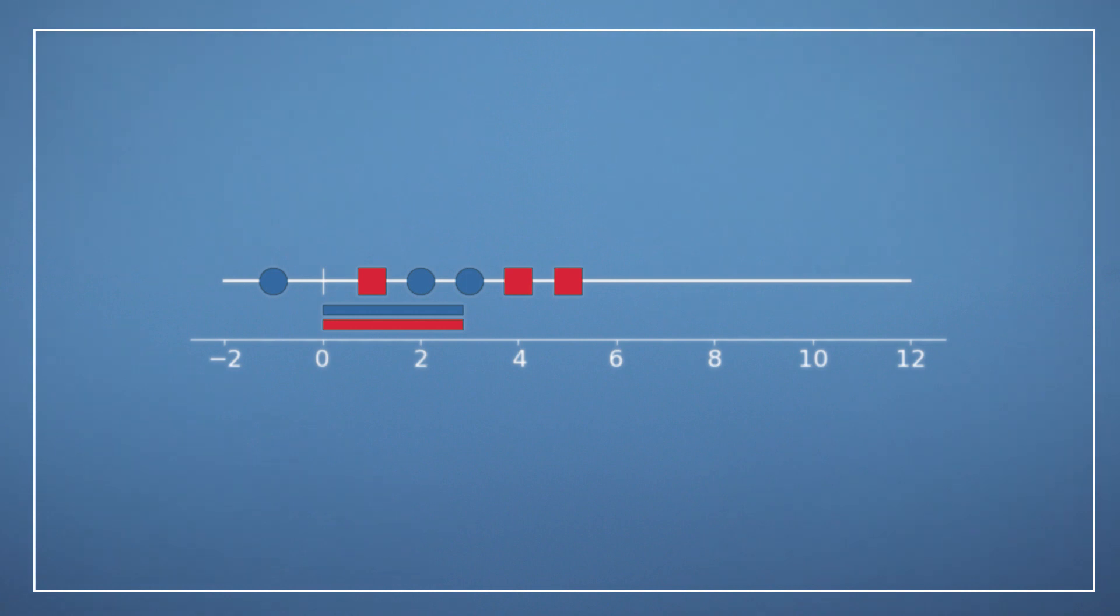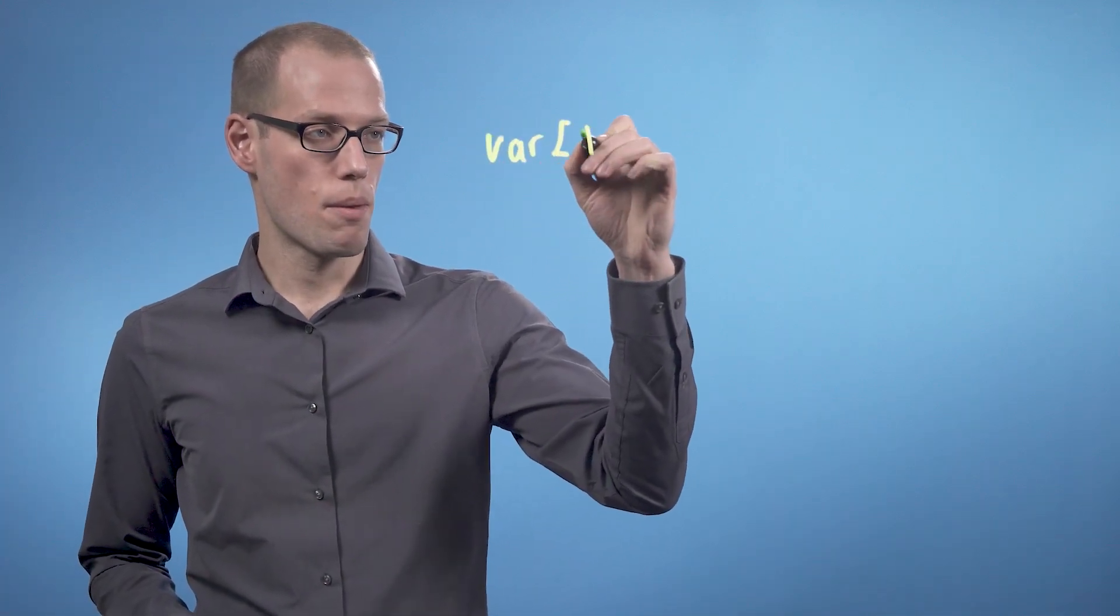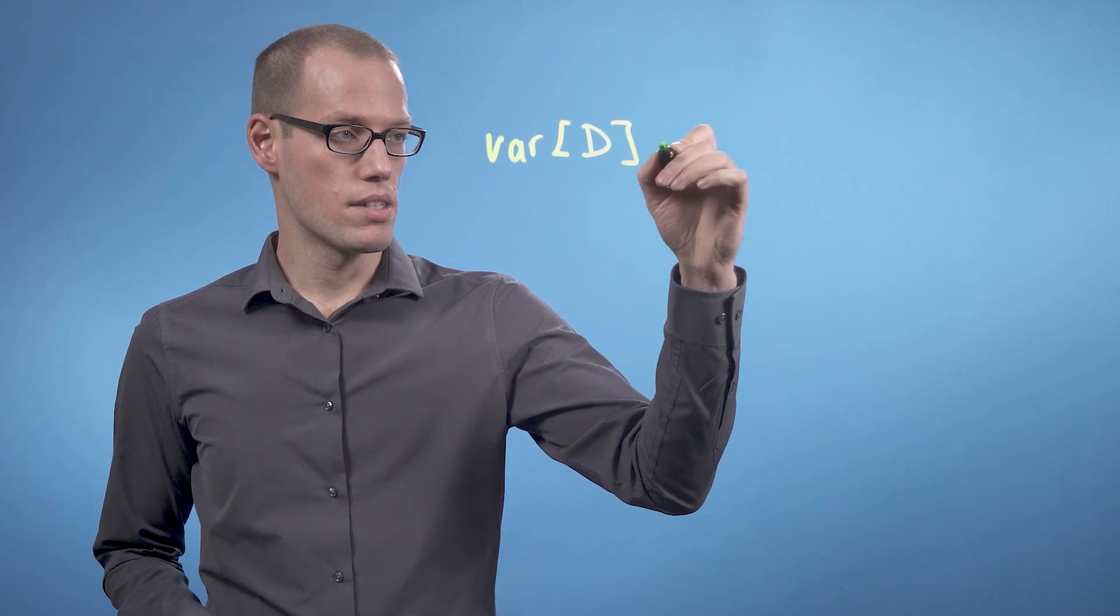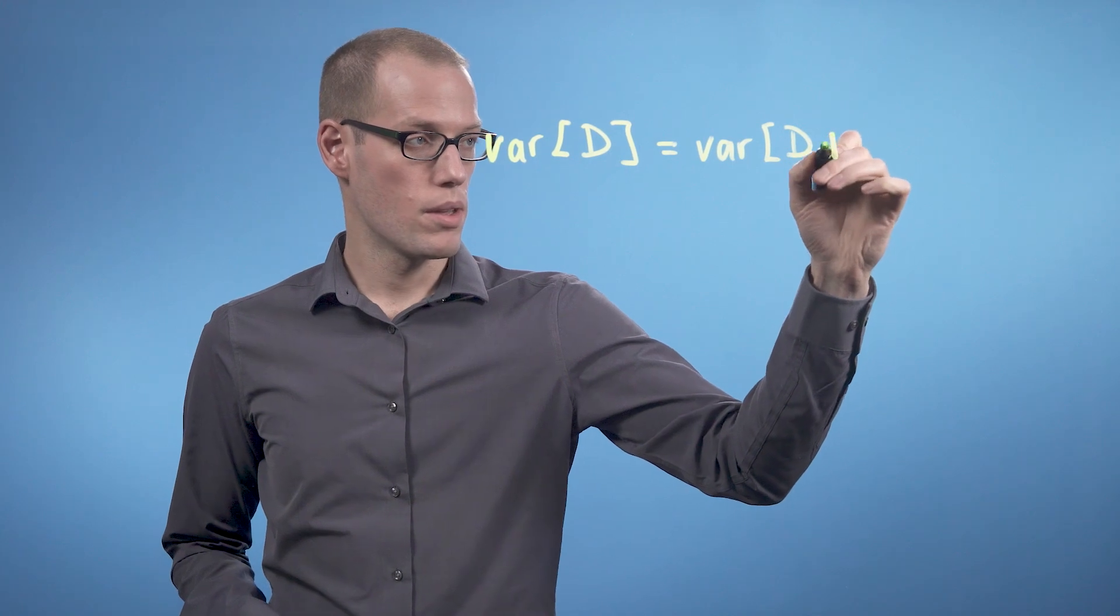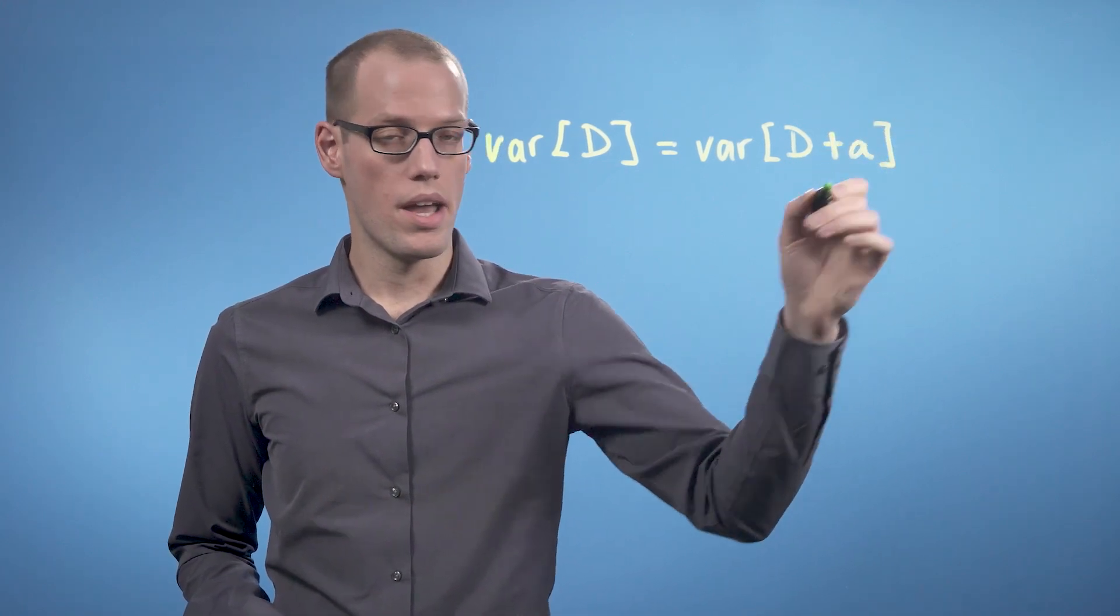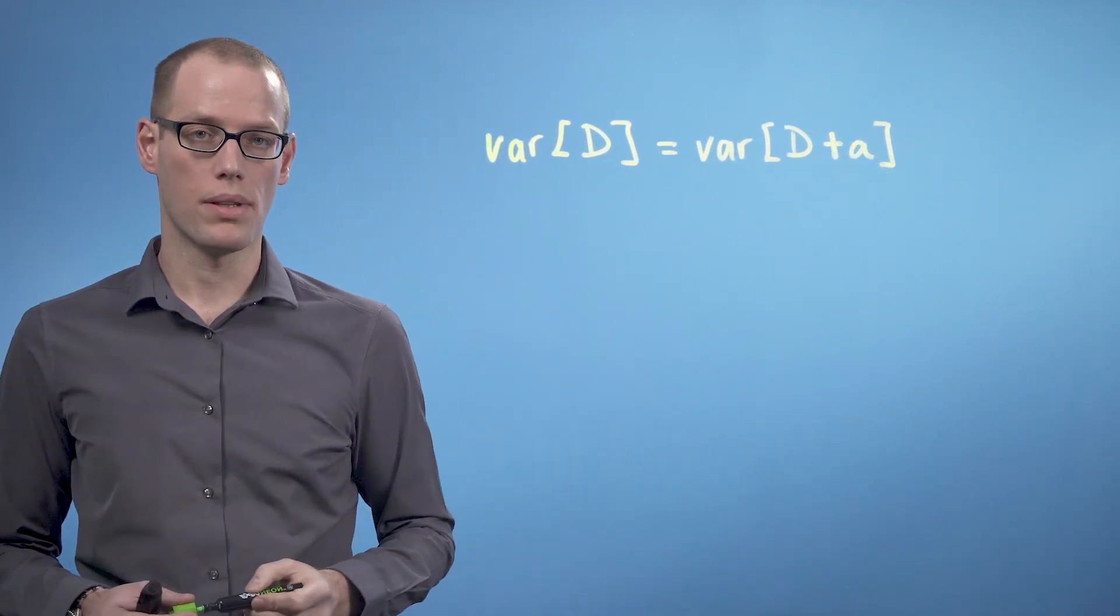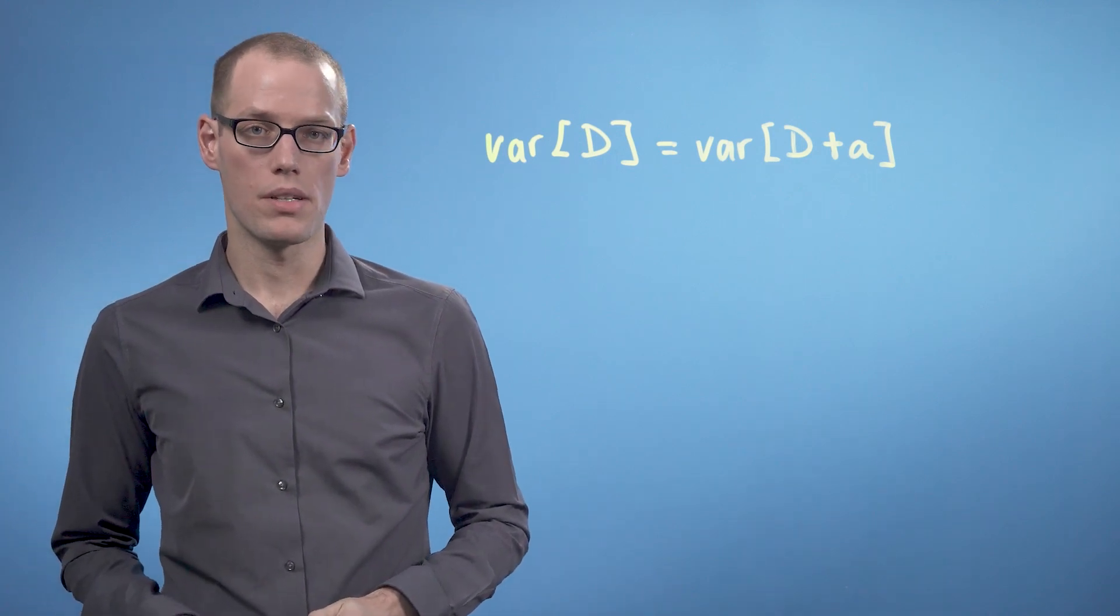So the variance of the blue data set is identical to the variance of the red data set. Therefore, a general result is that if we have the variance of D, that is exactly the same as the variance of our data set D plus A, where A is an offset applied to every individual element of D.